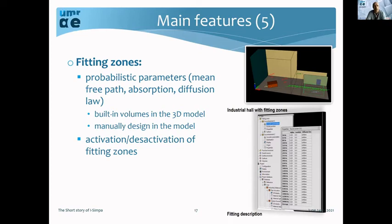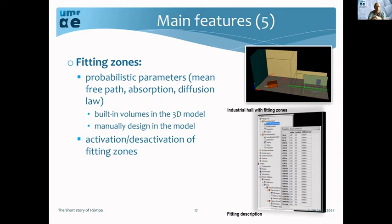Another particularity in I-Simpa is the possibility to create fitting zones. A fitting zone is a rectangular zone defined by statistical parameters to simulate the acoustic diffusion of sound in a domain with many components. It is a simple way to manage acoustic diffusion, for example in industrial halls where you have many objects on the surfaces. Instead of creating each object individually, you can create a whole domain with particular statistical parameters for diffusion.